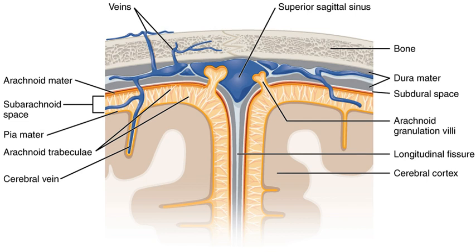It consists of two layers: the endosteal layer, which lies closest to the calvaria (skullcap), and the inner meningeal layer, which lies closer to the brain. It contains larger blood vessels that split into capillaries in the pia mater. It is composed of dense fibrous tissue, and its inner surface is covered by flattened cells like those present on the surfaces of the pia mater and arachnoid mater. The dura mater is a sac that envelops the arachnoid mater and surrounds and supports the large dural sinuses carrying blood from the brain toward the heart.